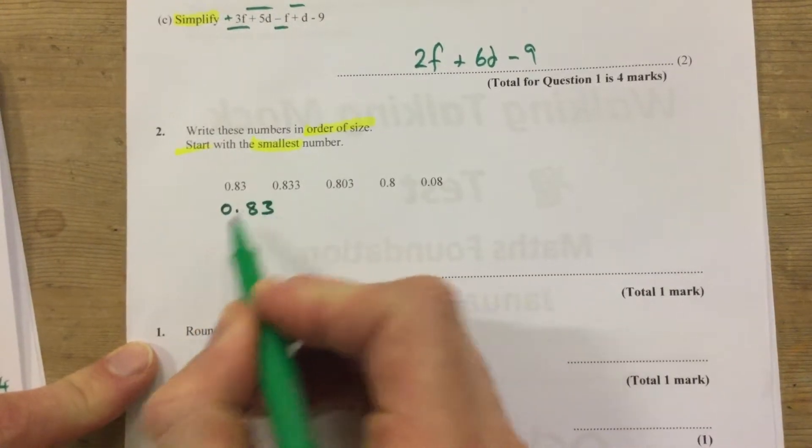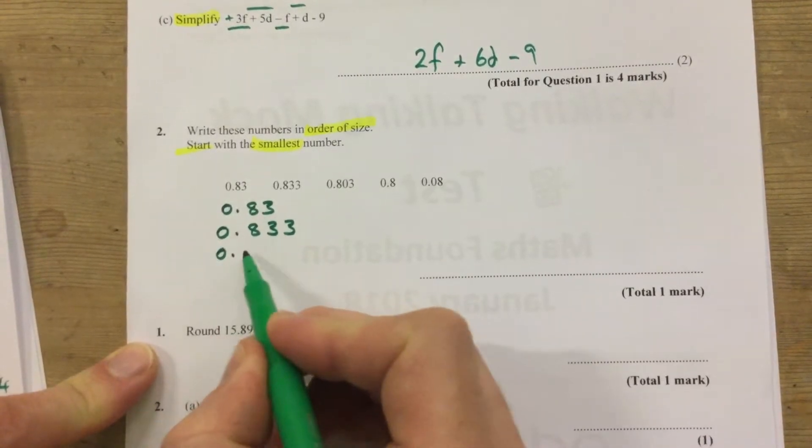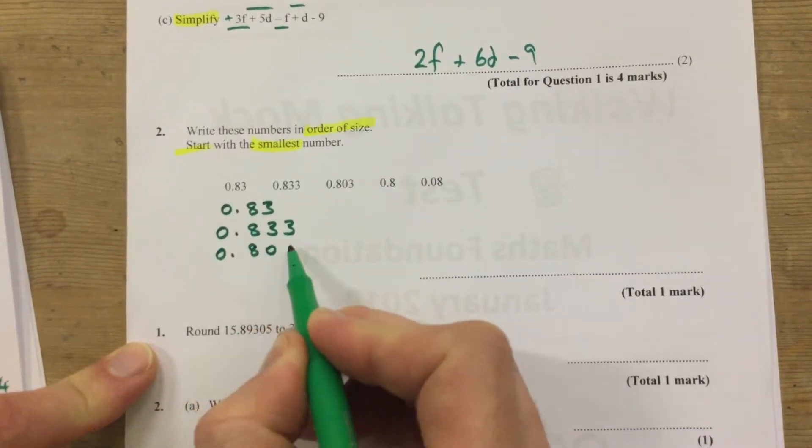0.83, 0.833, and the only important thing here is making sure you're lining up the columns, that'll avoid any mistakes.